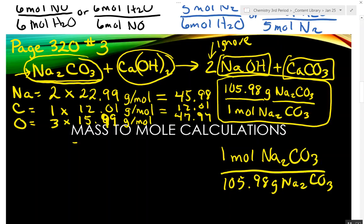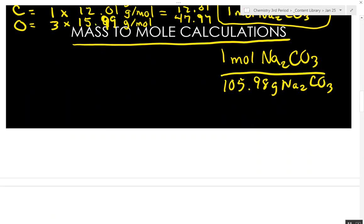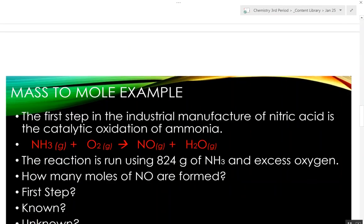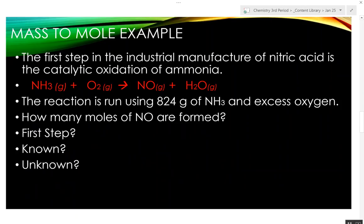All right. Today we're going to do mass-to-mole calculations. We're adding a step. You've done these separately. Now we're going to put things together. Before, you've converted from moles to mass and mass to moles. And we've gone from mole to mole. So now we're going to start putting it together. And here's what we got. The first step in the industrial manufacture of nitric acid is the catalytic oxidation of ammonia. Is this balanced? I'm going to hit pause.